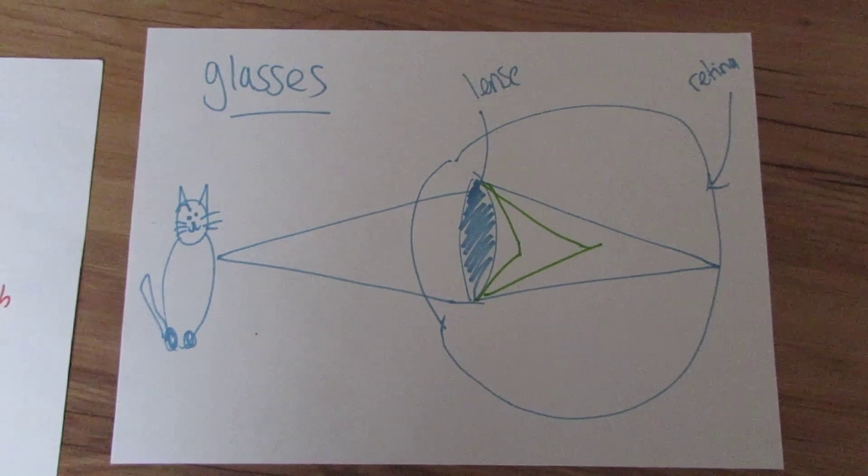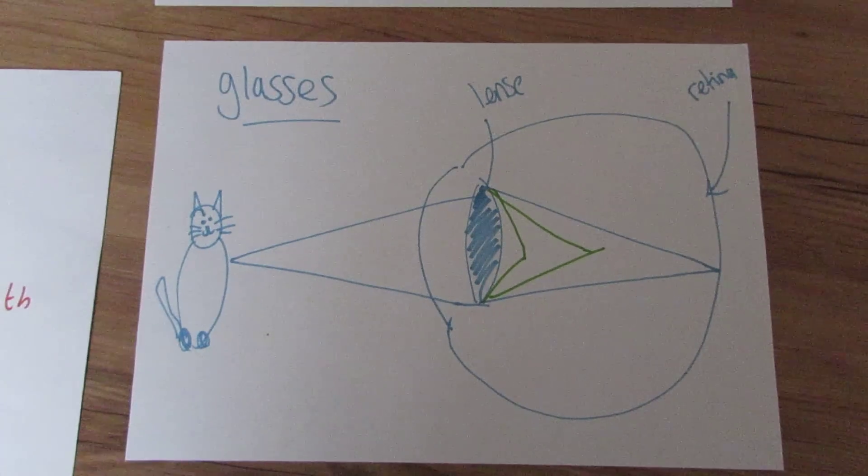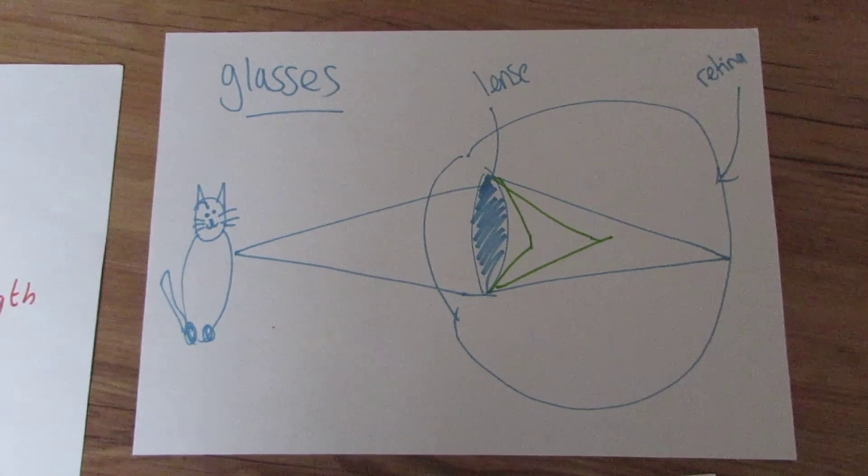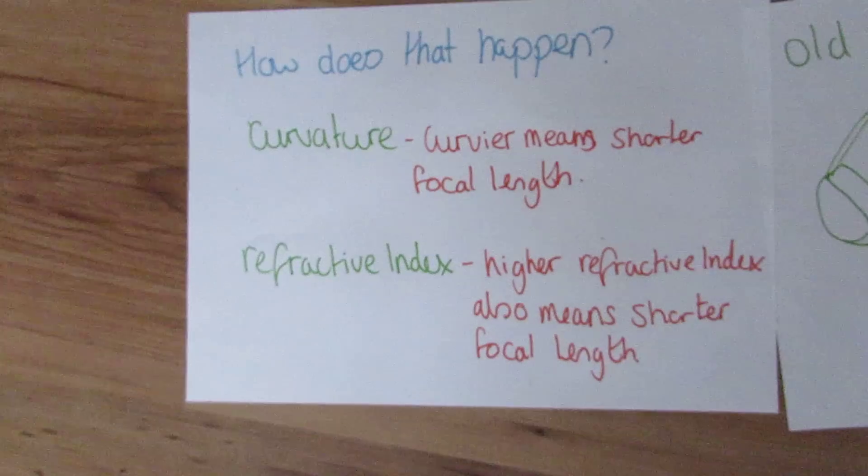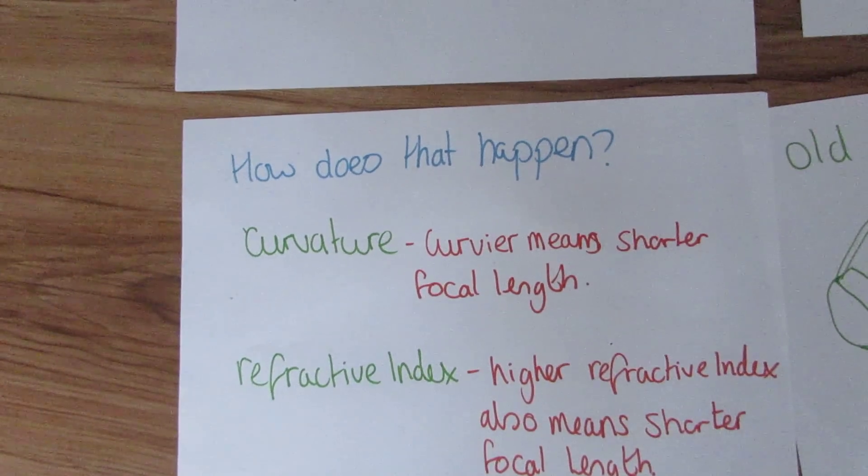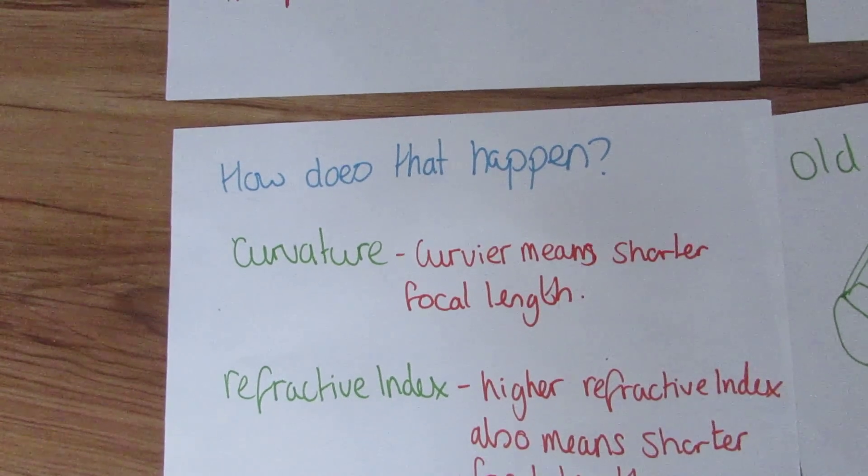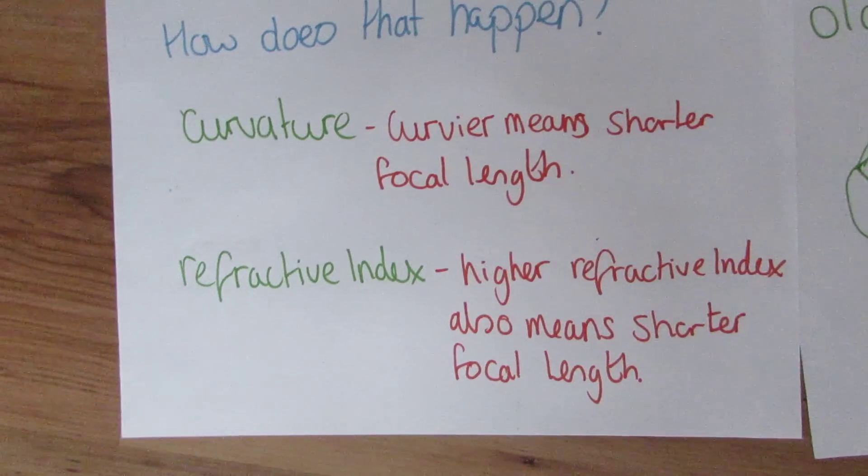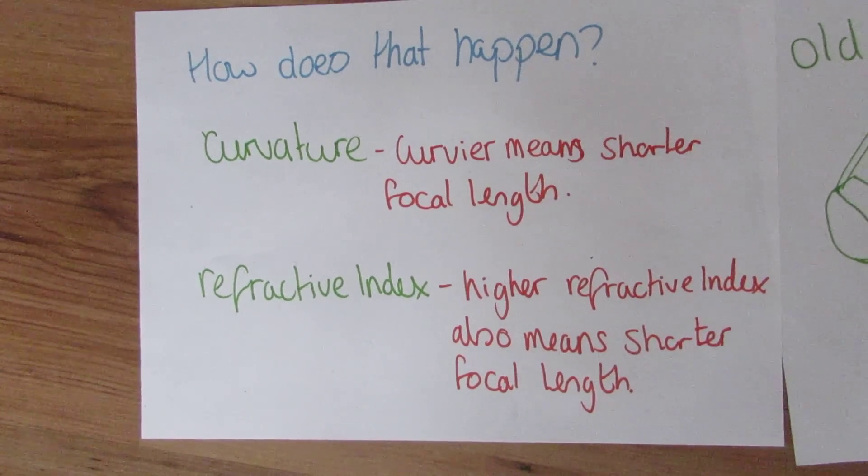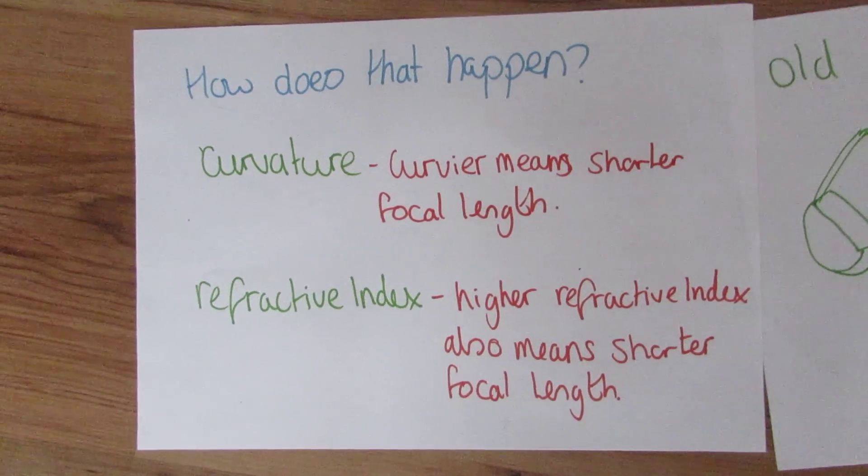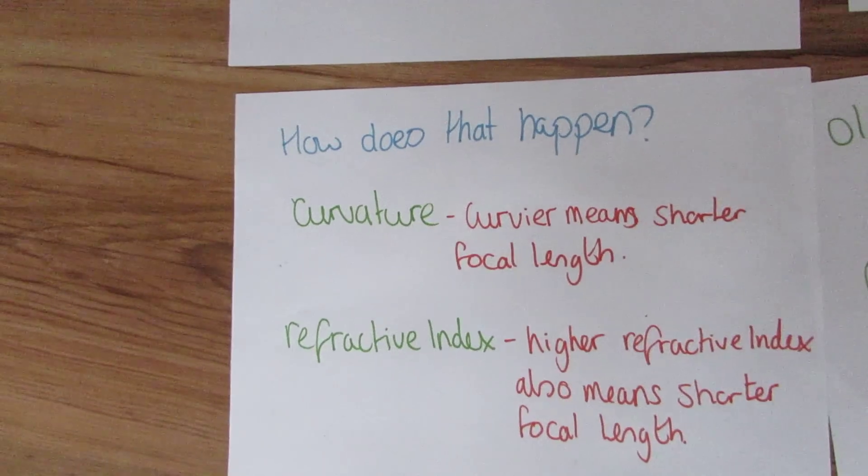There are two things you can do to change the type of glass in the glasses and where the image actually focuses. You can change the curvature. A curvier lens is going to be a shorter focal length. Or you could change your refractive index. If it has a high refractive index, it's also going to have a shorter focal length.